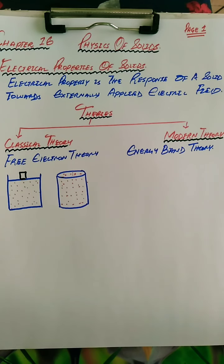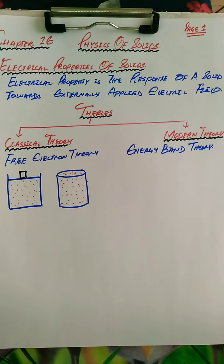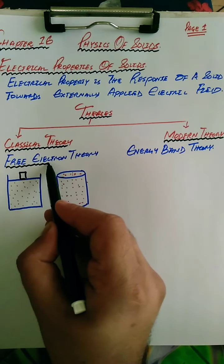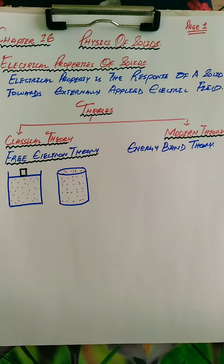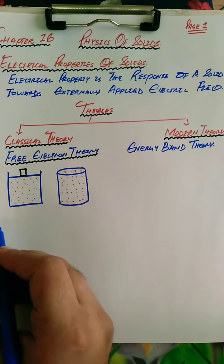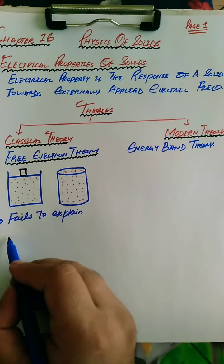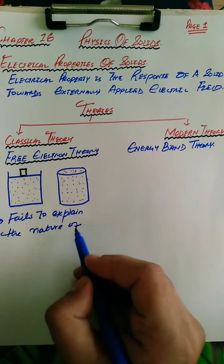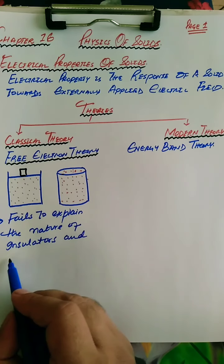If that is the case, then in any solid, free electrons are moving throughout the volume of the solid. If we follow the free electron theory, then all solids should be conductors - but that is not the case. This means the classical theory fails to explain the nature of insulators and semiconductors.